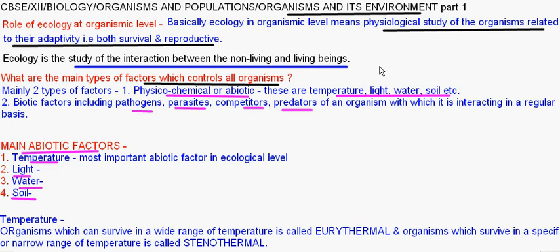The main types of factors which control the interaction between living and non-living beings are physiochemical or abiotic factors — including temperature, light, water, and soil — and biotic factors, which include pathogens, parasites, competitors, and predators of an organism with which it interacts on a regular basis. The time duration of interaction can be per day, per minute, per second, or per month or year. In this, we are going to mainly discuss the interaction of living beings with abiotic factors.